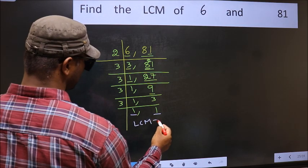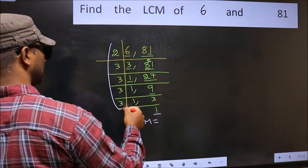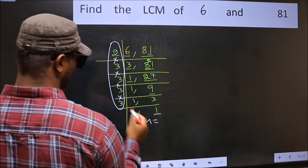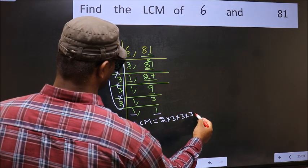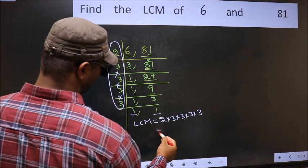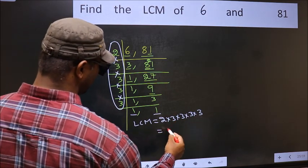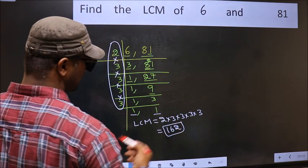So our LCM is the product of these numbers: 2, 3, 3, 3, 3, 3. When we multiply these numbers, we get 162 as our LCM.